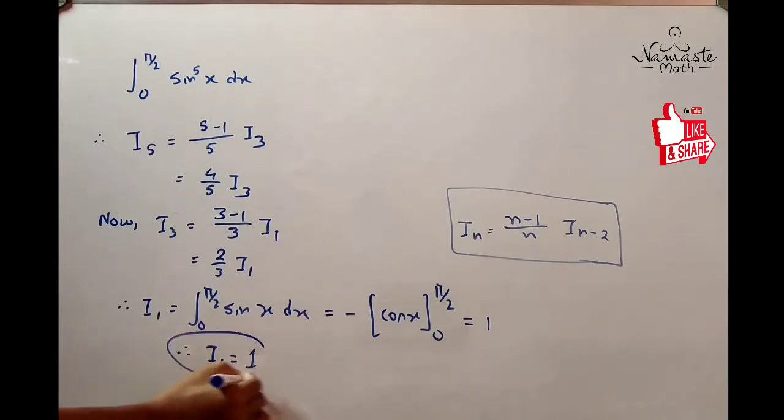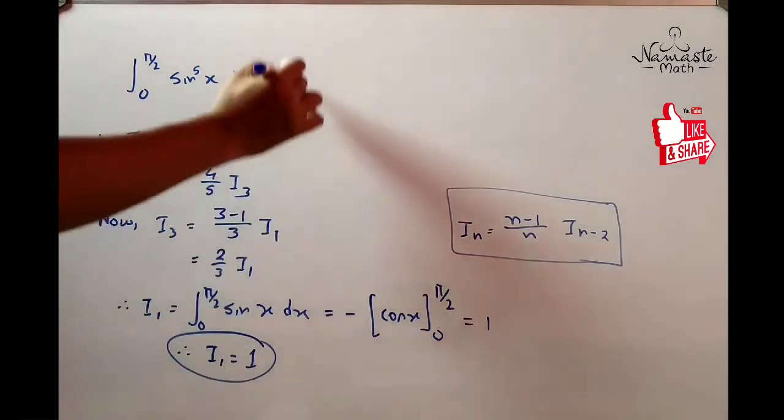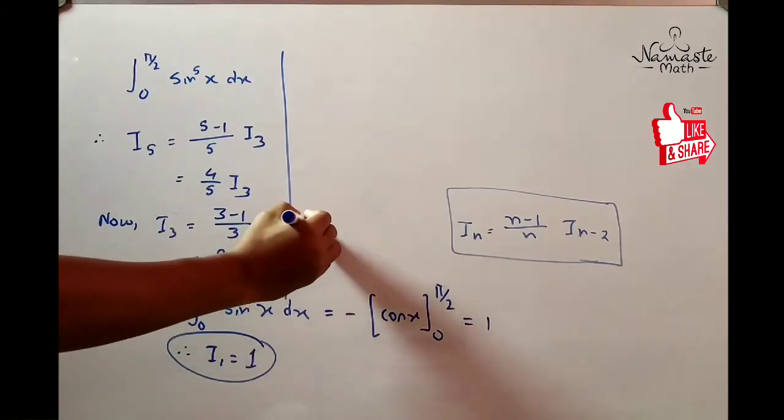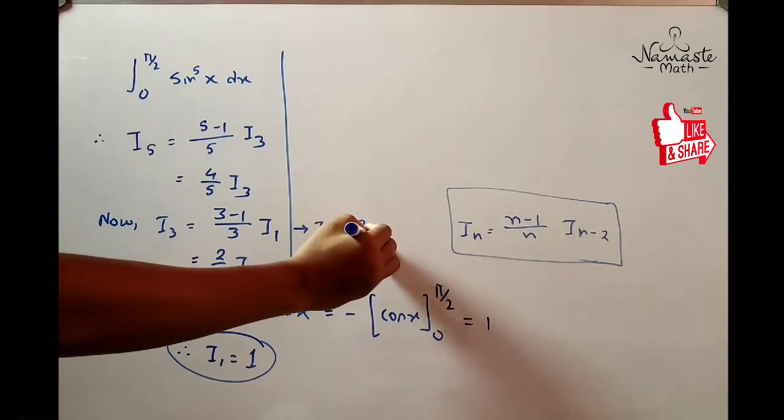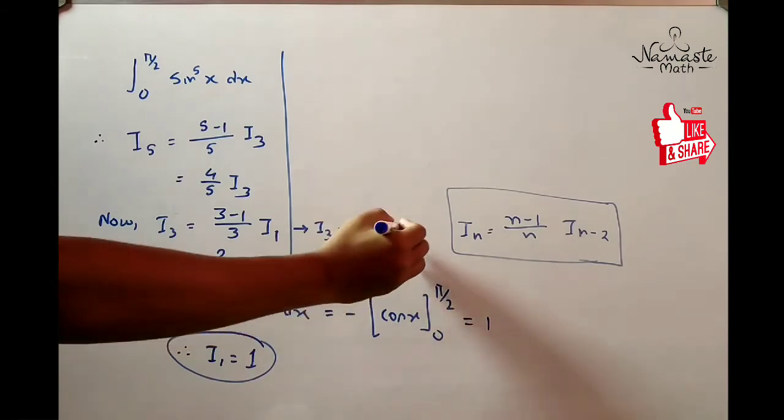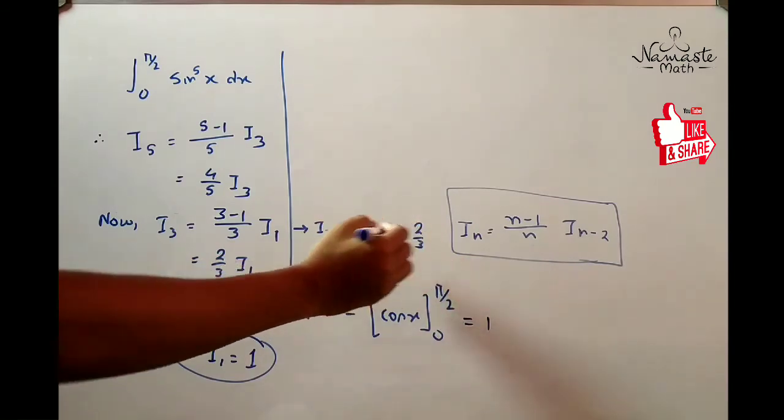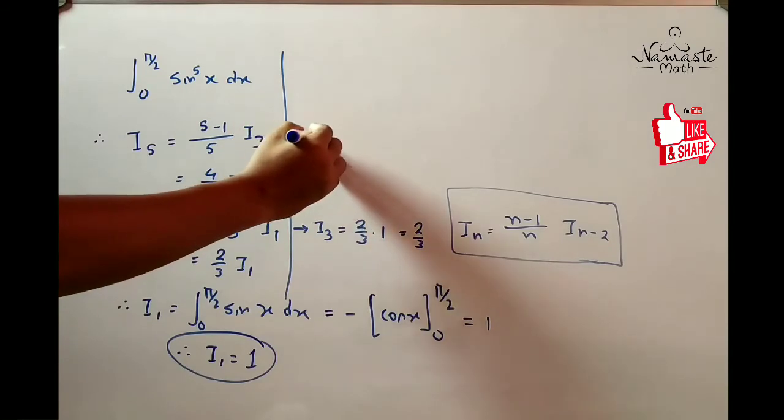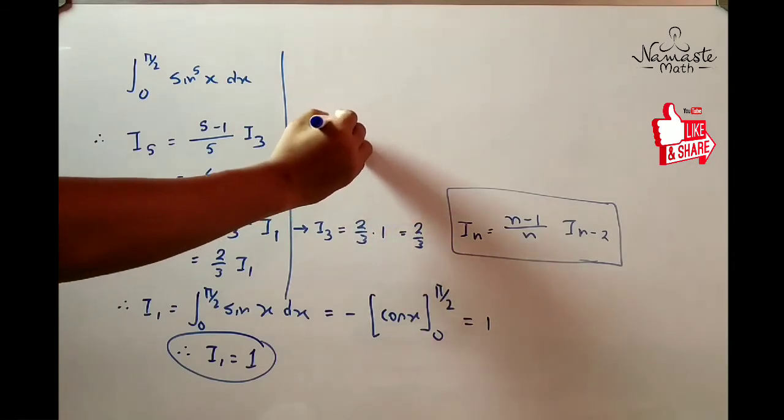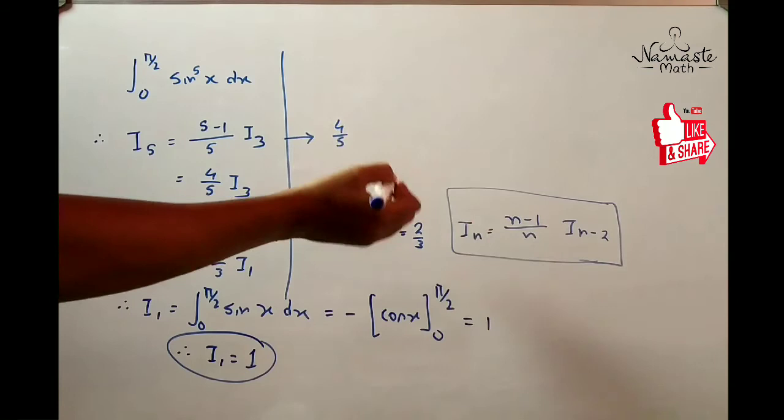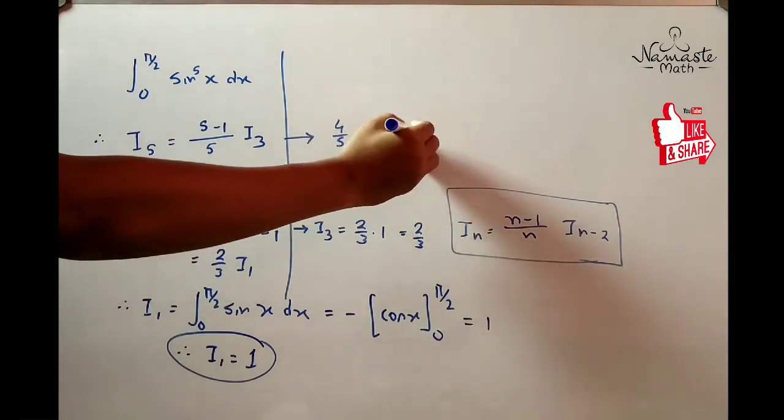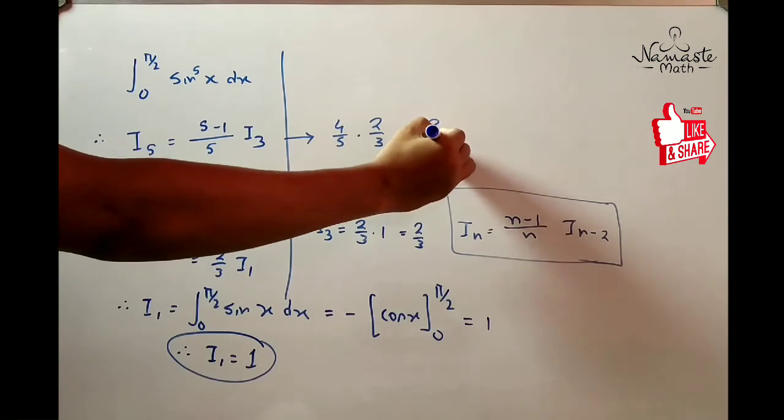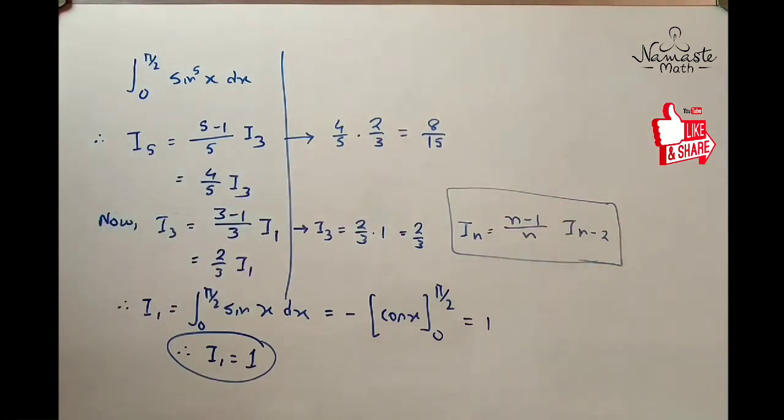Now we substitute this value in the above equations. I3 becomes 2/3 times 1, which is 2/3. So I3 = 2/3. And for I5 it's 4/5 times 2/3, which equals 8/15. So we get I5 = 8/15.